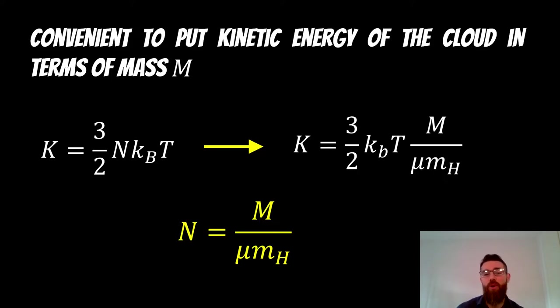So if we know the number of particles in a cloud, it's going to have some mass, because each particle will have some mass. So μ is the average molecular weight, and m_H is your atomic weight of the atom, and M is your mass of the cloud.